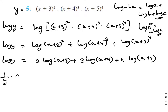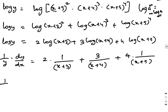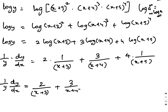Differentiating on both the sides, 1 by y into dy by dx will be equal to 2 into 1 by (x plus 3) into derivative of (x plus 3) is 1, plus 3 into derivative of log of (x plus 4) is 1 by (x plus 4) into derivative is 1, plus 4 into 1 by (x plus 5) into derivative is again 1. So, 1 by y into dy by dx equals 2 divided by (x plus 3) plus 3 divided by (x plus 4) plus 4 divided by (x plus 5).